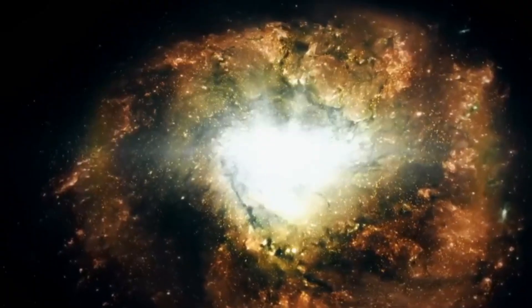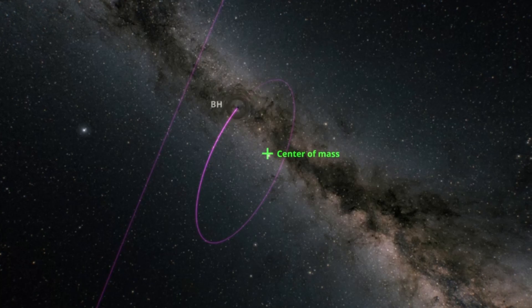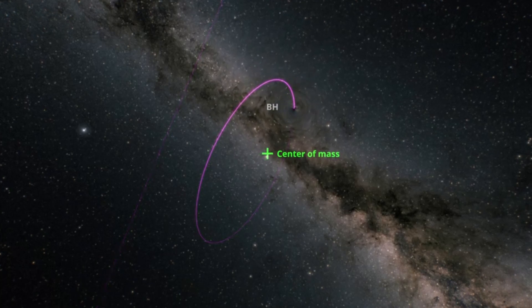But what about black holes that are sleeping, like Gaia BH3? How do astronomers detect dormant black holes that aren't actively feeding on surrounding gas and dust?